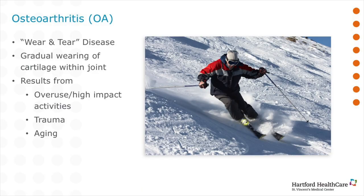The most common type of arthritis is actually osteoarthritis, primarily of the hips and knees. Also known as wear and tear arthritis, osteoarthritis occurs when the cartilage that cushions and protects the ends of our bones gradually wears away. It results from overuse, trauma, or the natural degeneration of cartilage that occurs with aging.